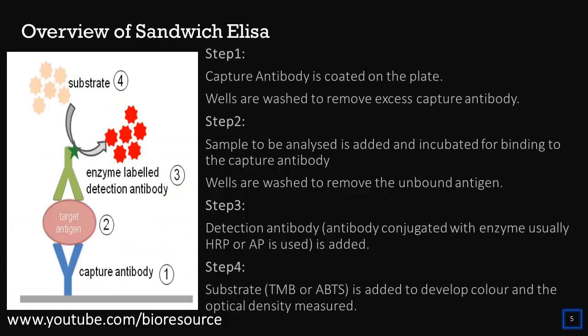Let's see the overview of sandwich ELISA. The capture antibody is coated on the plate, and after coating, the wells are washed to remove excess capture antibody. The second step is to add the sample to be analyzed and incubate it with the capture antibody. After the incubation step, the wells are washed to remove the unbound. In the third step, the detection antibody with the conjugate enzyme is added to the well.